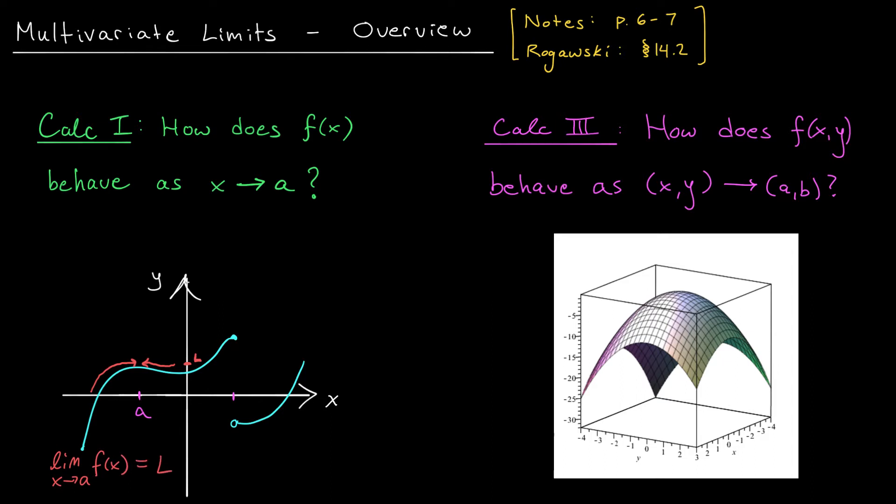Suppose now that instead of approaching this point on the left, we are interested in the behavior of our function as we approach this point over here on the right. Maybe we'll call this point b. Well, as we approach from the left, it looks like our function is approaching some positive y value up here. But if we approach from the right-hand side, our function seems to be approaching a negative value. The behavior of the function is not consistent between approaching from the left and approaching from the right.